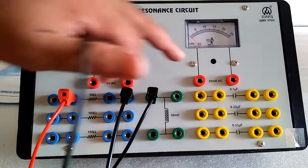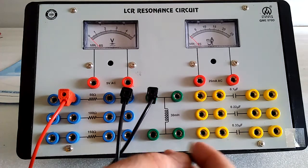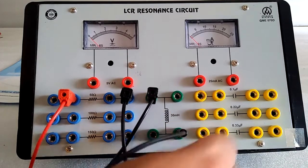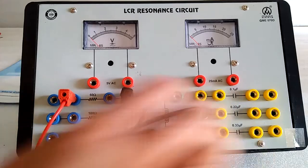Here is the voltmeter 5 volt AC and the current meter 25 milliampere AC. The other inductance terminal goes to any one of the capacitance options.